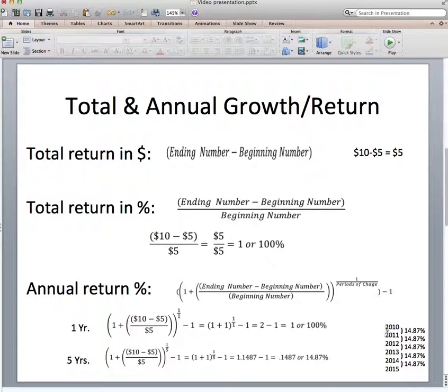This goes from 2010, 11, 12, 13, 14, 15. Now that's 6 years, but that's 5 years of growth. Growing from 10 to 11 is 1 year. 11 to 12 is 2 years. 3 years, 4 years, 5 years.